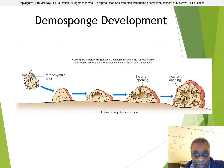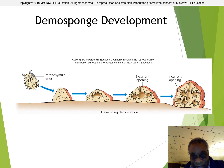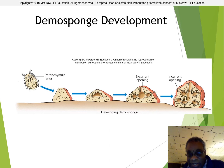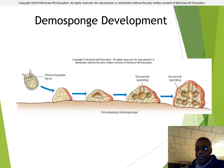Here's the parenchymula larva floating around in the water column. You can see the choanocytes are sticking out on the outside of its body. Then it lands on the surface, the spicules start to rearrange themselves, it starts to develop a spongocoel, and as that happens the choanocytes that are on the outside move to the inside. As they move to the inside, they start to form their chamber systems so that the juvenile sponge can start to pull water in like a real adult sponge.